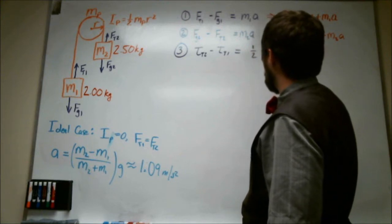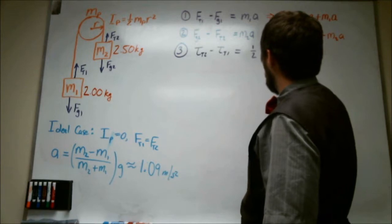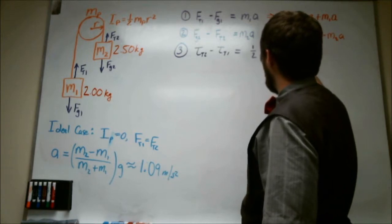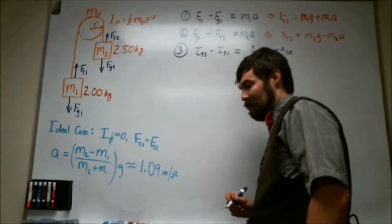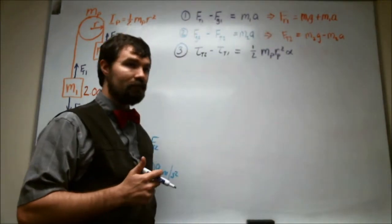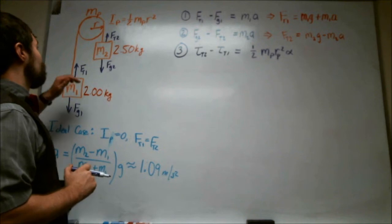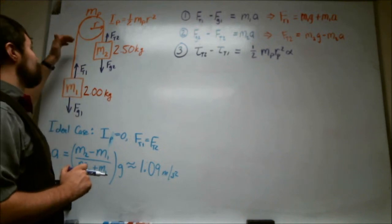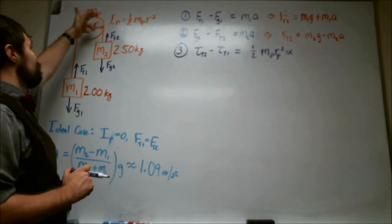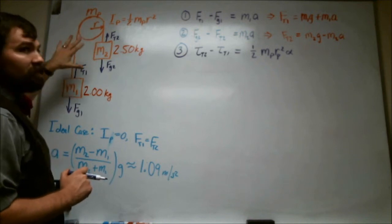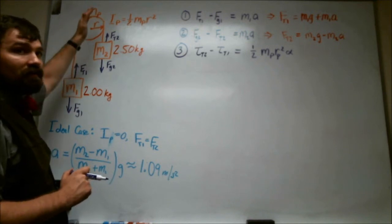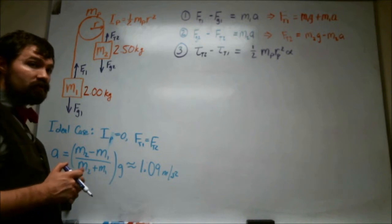radius of the pulley squared times alpha. Alpha is the angular acceleration. And at this point we should notice that the acceleration of each mass is going to be equal. And it's going to be the same acceleration as every part of the string.